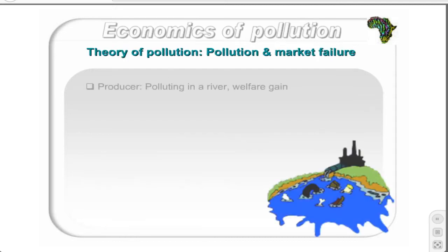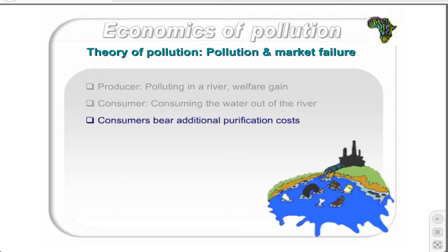Consider a private company, for example a paper mill, which is emitting water pollution into a river. The more paper the mill is producing, the more effluent pollution the mill is discharging into the river. Downstream, there are households that are using the river as a source of drinking water. The households prefer to consume clean water. When there is poor water quality due to the mill's pollution, the households have to purify the water before consuming it, and thus bear the cost of pollution.